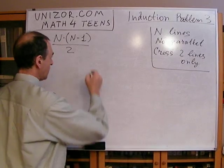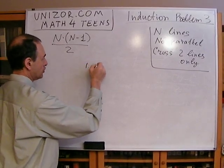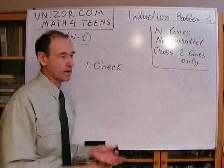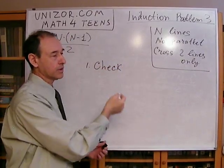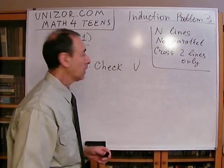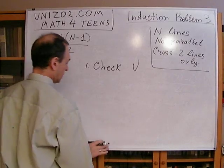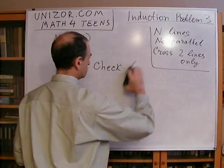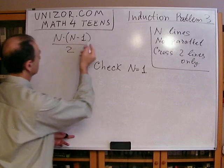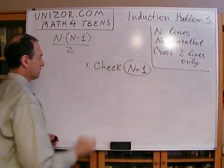Let's go through the steps. Step number one: check. We have already checked for n equals one, two, and three. The formula holds, so the check is fine. For n equals one — one line — the formula gives zero, and indeed there are no crossings because there is only one line.